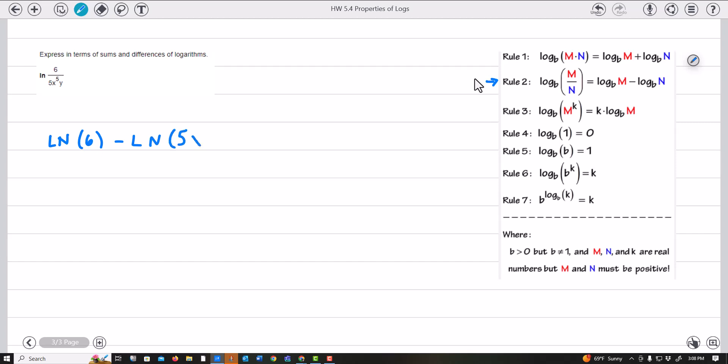So 5x to the 5th y. Now this piece right here I see is being multiplied, so I'm going to turn that into a sum.